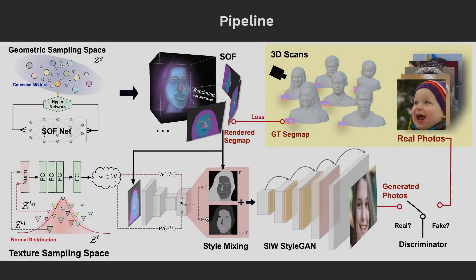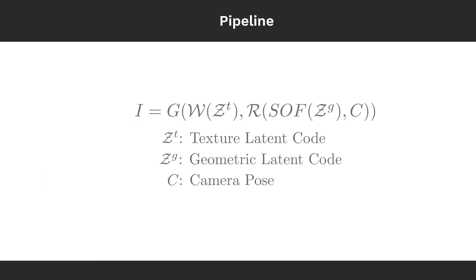Here we show our pipeline. Unlike traditionally generating images from a single latent space, we propose to decompose it into three individual control variables: camera pose, shape vector, and texture style vector.